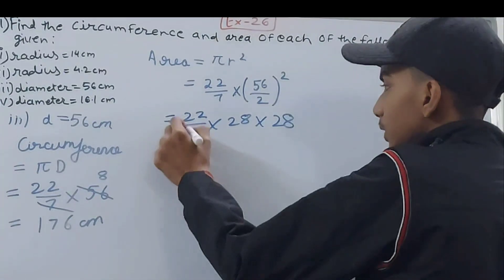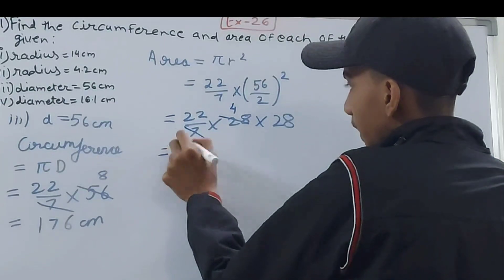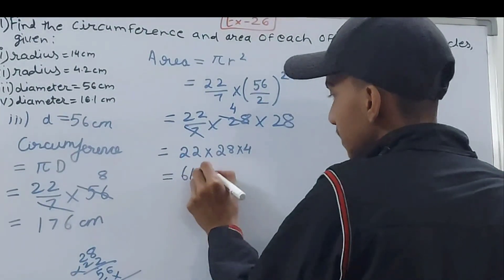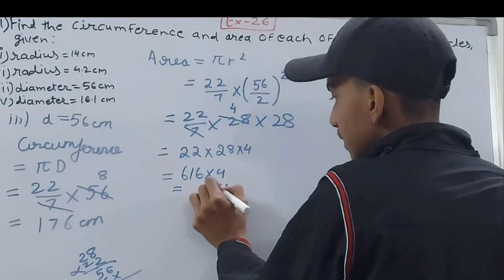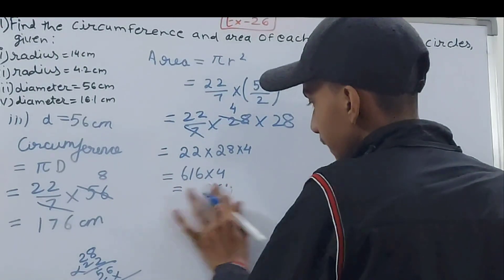56/2 = 28 and square will be there so 28 × 28. Now we can solve this. 22 × 4 = 88, then 616 × 4 = 2464. That's the area of my circle.